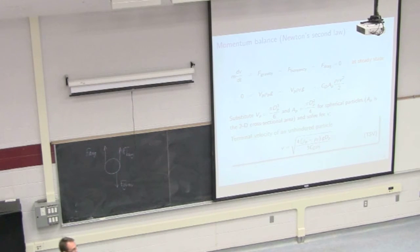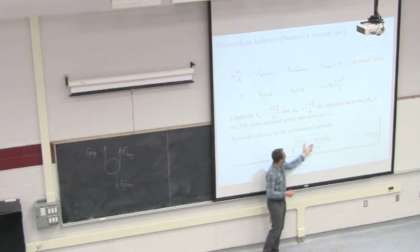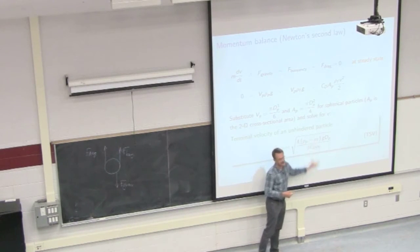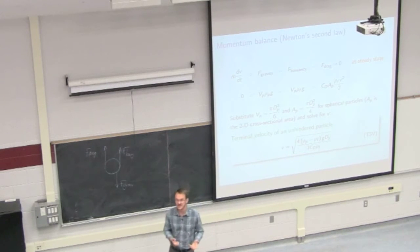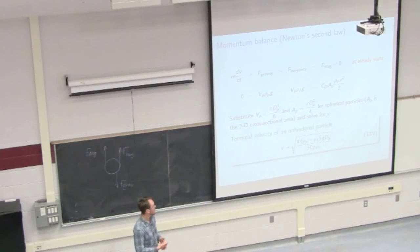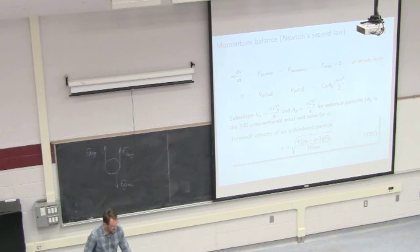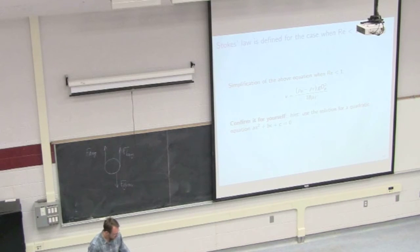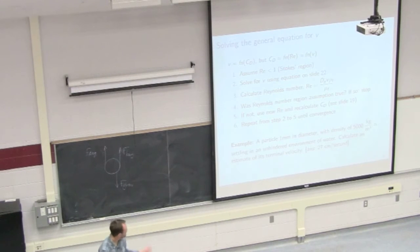And I left you last class with this consideration that terminal settling velocity really is the main function that causes these particles to settle is the fact we're getting a difference in density. If that difference in density was non-existent, that particle is perfectly static, there's no movement. So I'd asked you then to solve this problem, this example here.